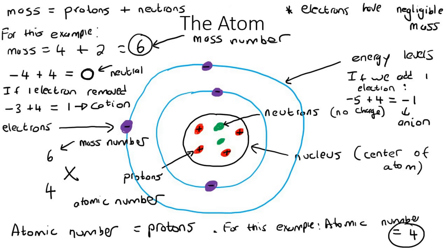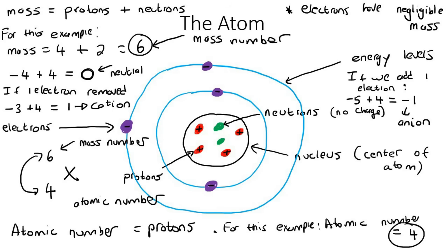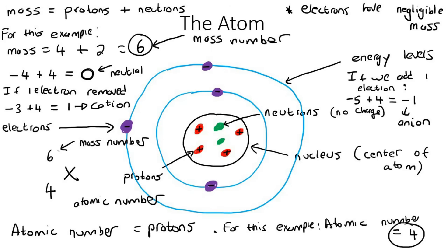On the next slide I'm going to show you what it looks like on the periodic table, because on the periodic table they switch these two around, and learners get really confused. What they show in AZX notation and what the periodic table shows are not the same structure. On the periodic table, they put the mass number at the bottom and the atomic number at the top — it's weird, but we'll get to that.